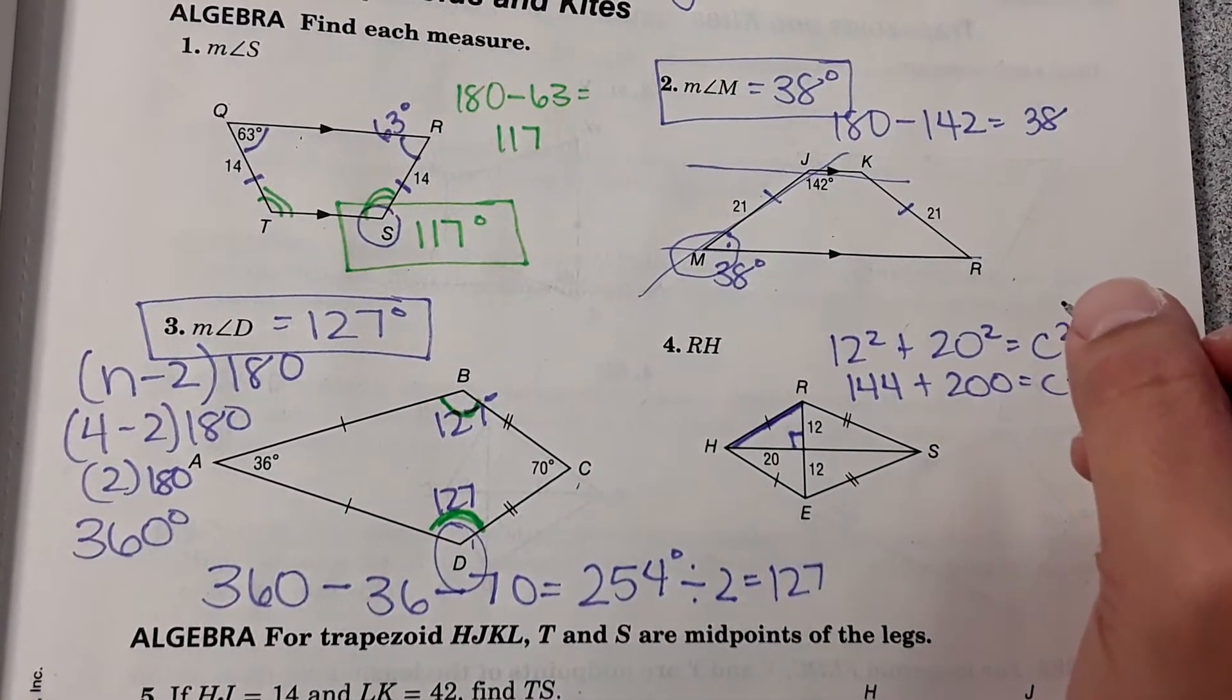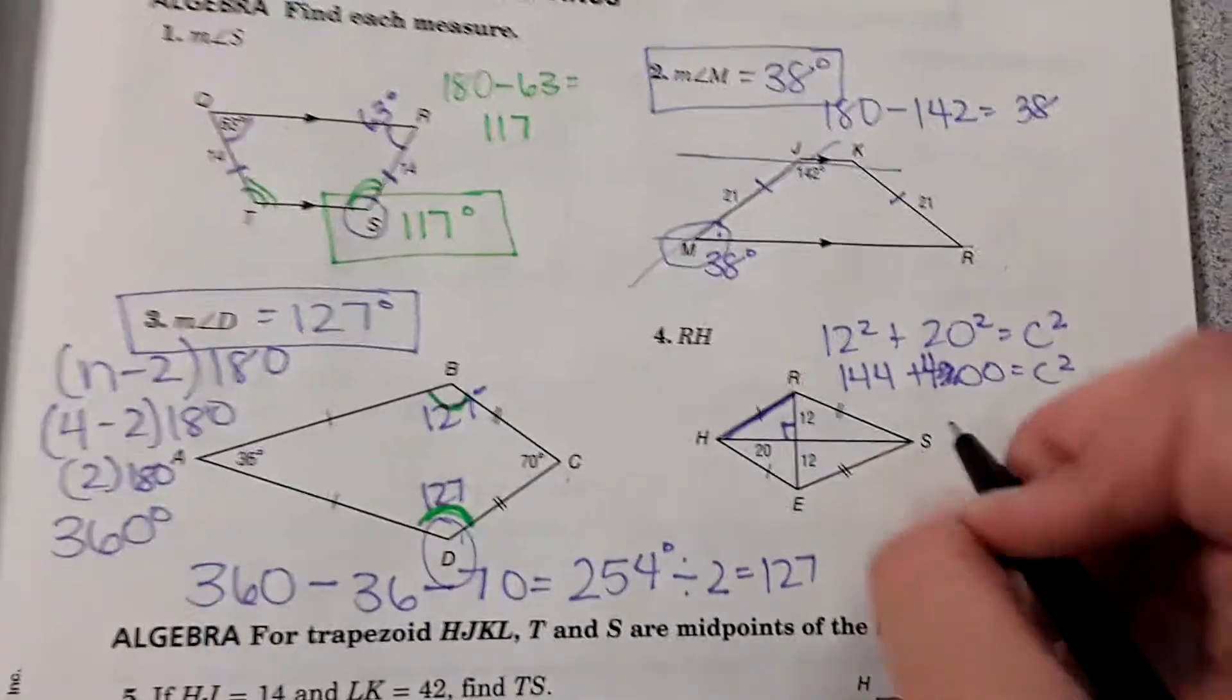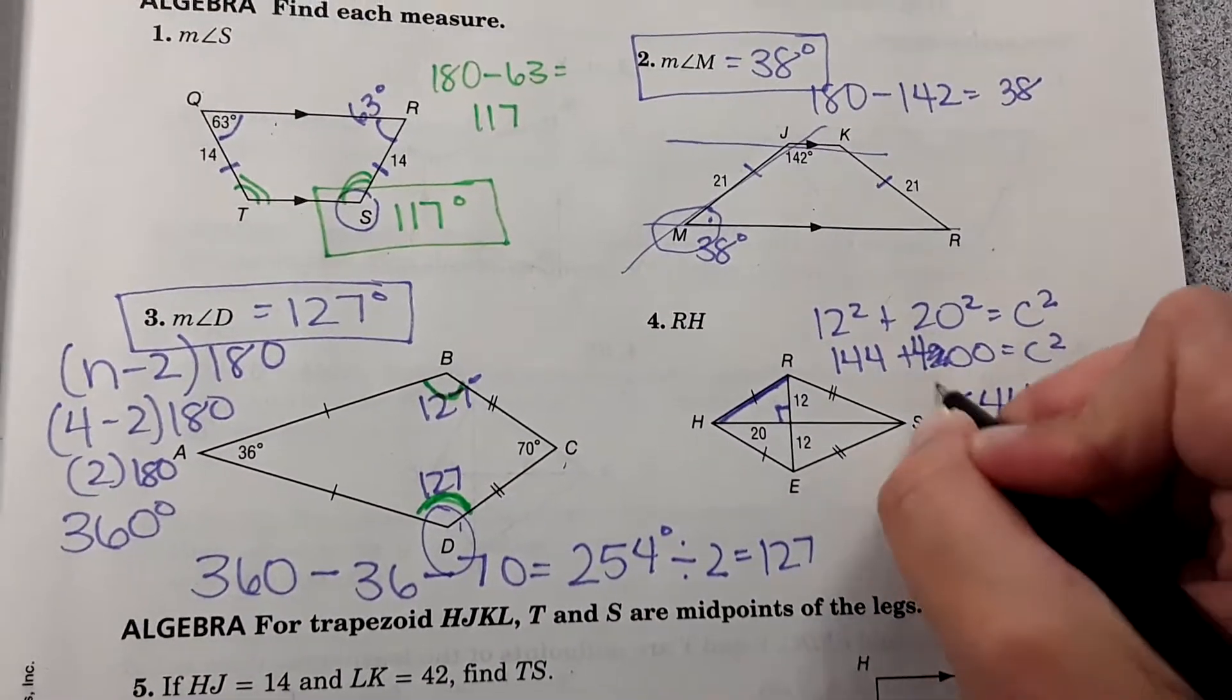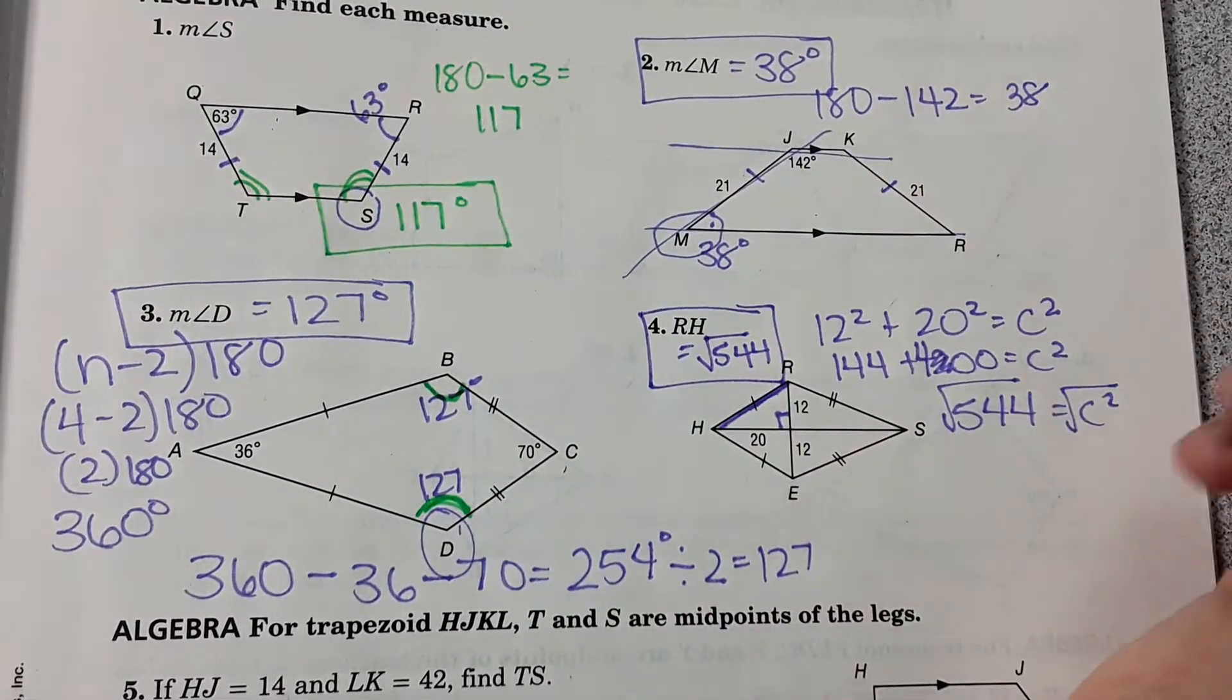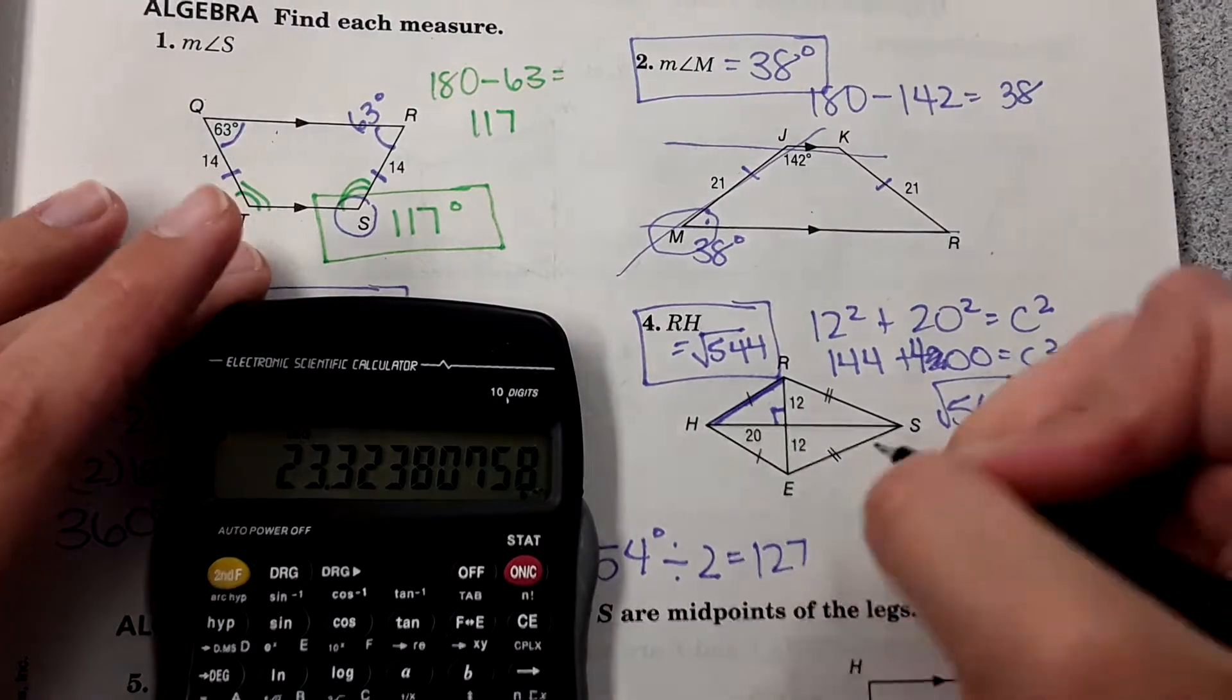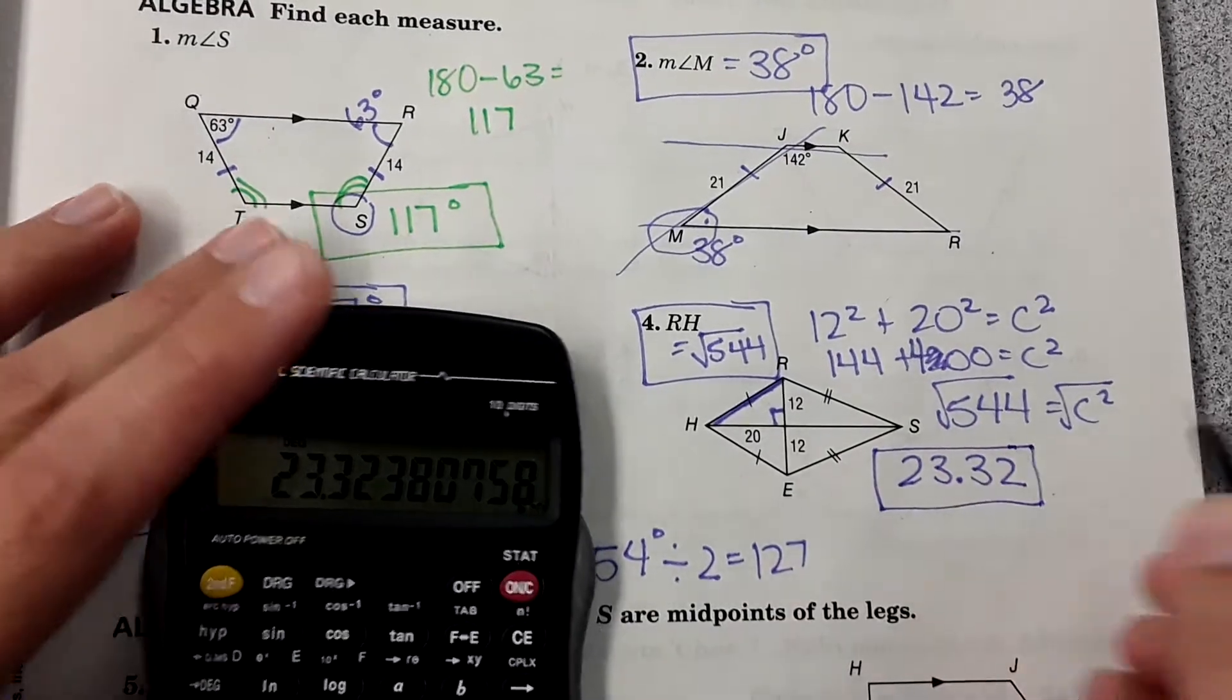Wait, I wrote down the wrong number, it's 400. So 144 plus 400 equals C squared. So you get 544 equals C squared. Take the square root of both sides. So our answer is square root of 544. We could simplify that. If you plug 544 and take the square root in a calculator you get 23.32.